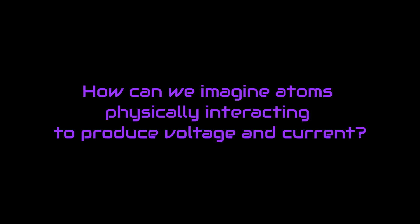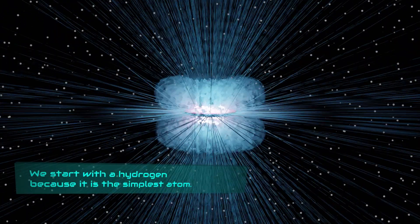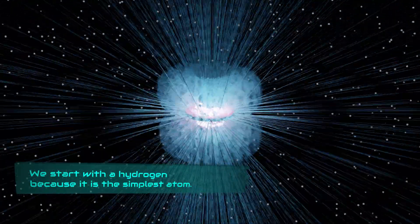How can we imagine atoms physically interacting to produce voltage and current? We start with hydrogen because it is the simplest atom.